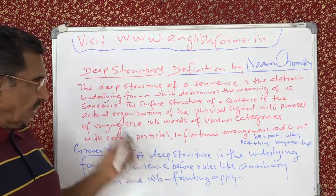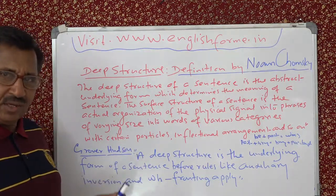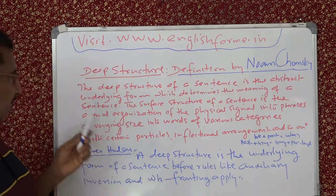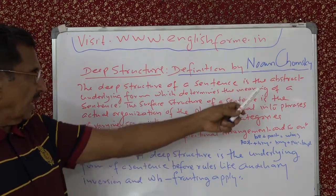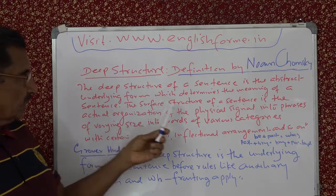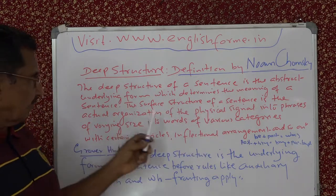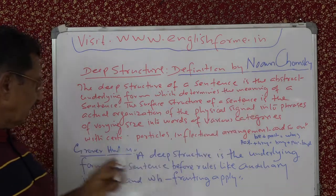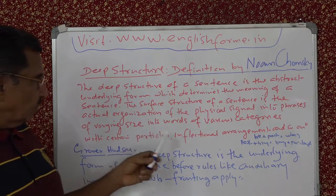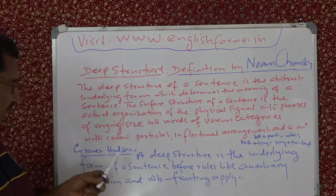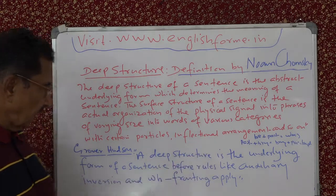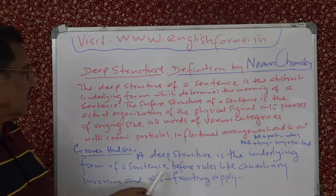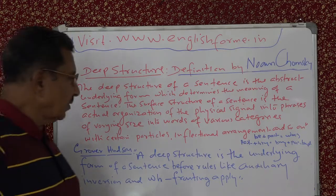First you apply the SAI rule — subject-auxiliary inversion — and then you front the WH word. Now let me write the definitions for you. The deep structure of a sentence is the abstract underlying form which determines the meaning of a sentence. The surface structure of a sentence is the actual organization of the physical signal into phrases of varying size, into words of various categories, with certain particles, inflection arrangements, and so on.